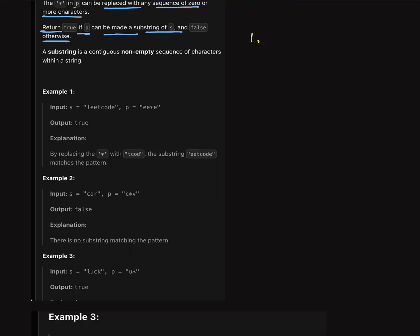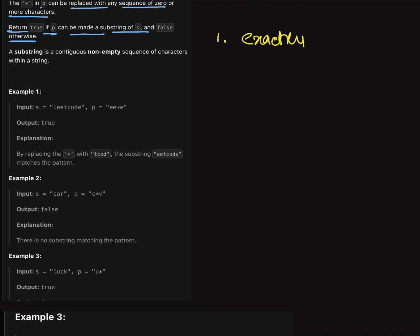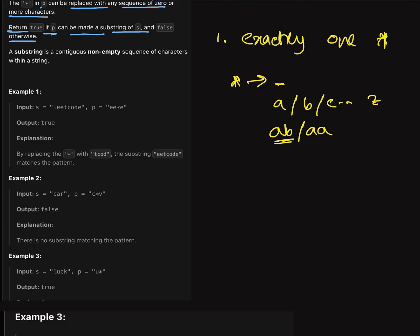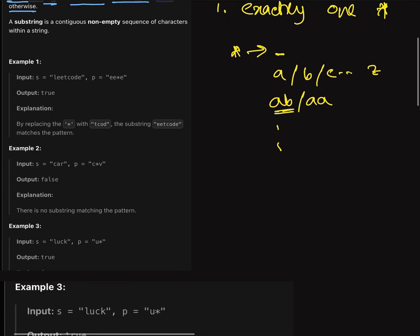One key observation: exactly one star character will be present in string p, and star can be replaced with 0 or more characters. If it is replaced with 0 characters it will be null. It can be replaced with a, b, c up to z, or with multiple characters like 'ab', 'aa' — any number of characters, and the characters can be the same or different.